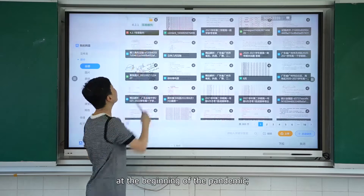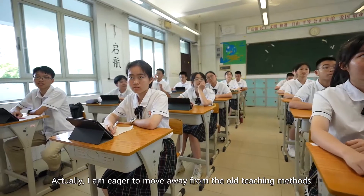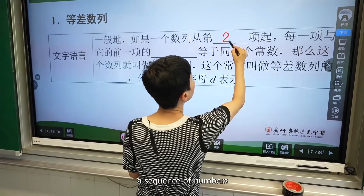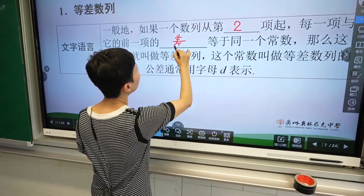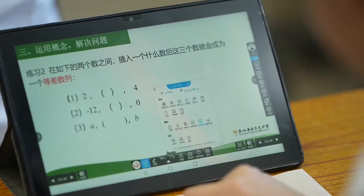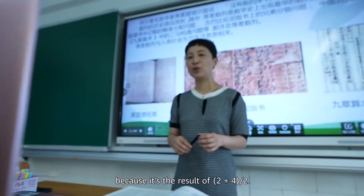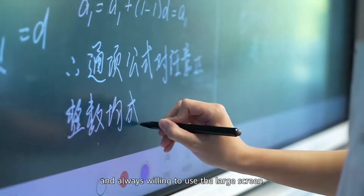We use the IDEA Hub in every lesson. We first used the whiteboard and software at the beginning of the pandemic, and now smart device operations have become our second nature. I am eager to move away from old teaching methods. Arithmetic progression is described as a sequence of numbers where the difference between consecutive terms is constant. With extensive and quality multimedia courseware available, students' interest in learning has rocketed — they are more engaged and always willing to use the large screen.